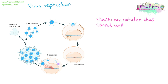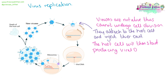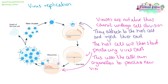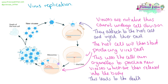Viruses are not alive, thus they cannot replicate by themselves. They will attach to the host cell using their attachment proteins and then inject their DNA into the host cell. The host cell then starts producing this viral DNA, and the viral DNA instructs the cell's own organelles to produce new virus particles. These new virus particles are released into the body, killing the host cell, and the body is then swamped with new viruses.